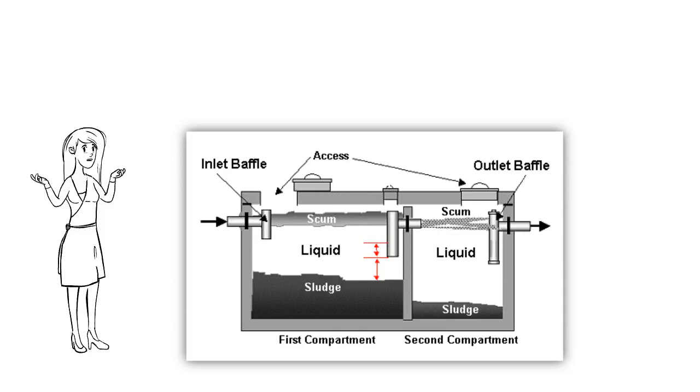If the sludge layer builds up too far it will clog both sides of the tank and possibly the leach lines.